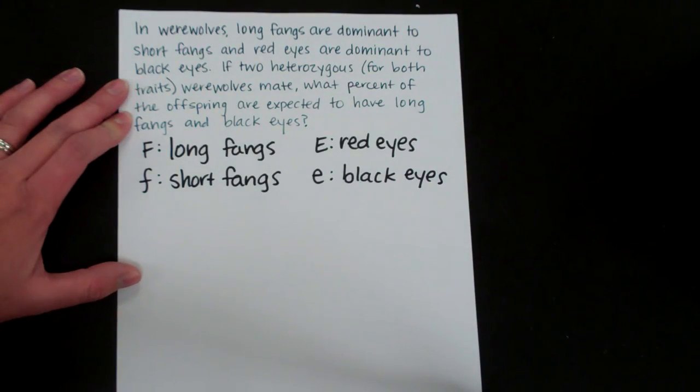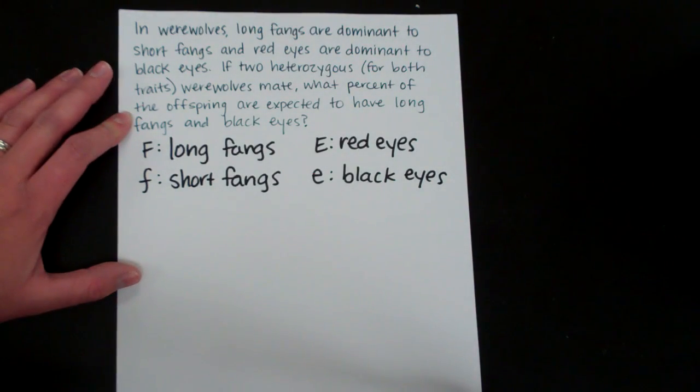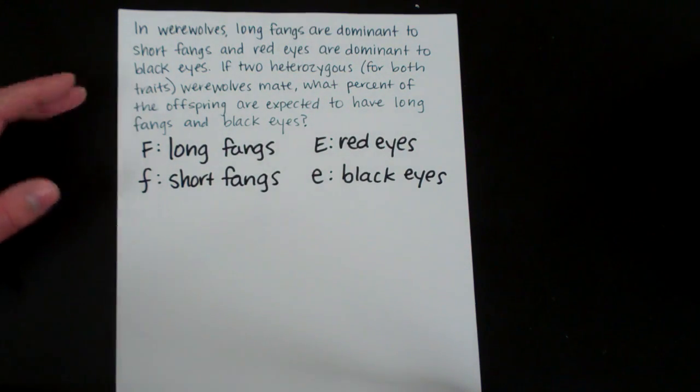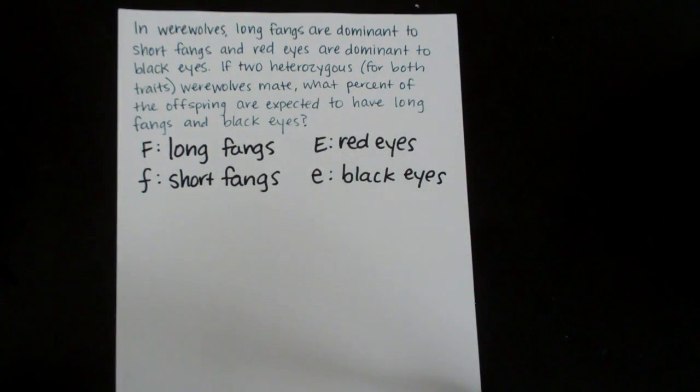There's several different ways to do dihybrid crosses. I think the easiest way is to actually use two Punnett squares. So you're familiar with doing one Punnett square at a time but here we're going to use two.